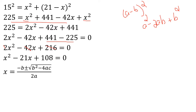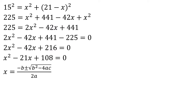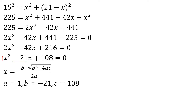Applying the quadratic formula: minus b plus or minus root of b squared minus 4ac, divided by 2a. Identifying values: x squared coefficient is a equals 1, coefficient of x is b equals minus 42, and constant c.